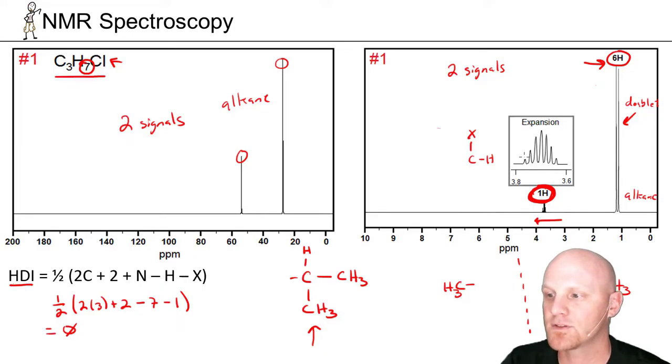And in this case, if we count the peaks, it's one, two, three, four, five, six, seven peaks, which means six neighbors. And indeed, that's those six hydrogens right there.